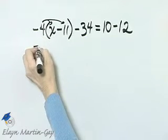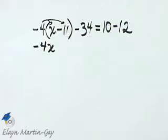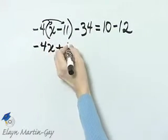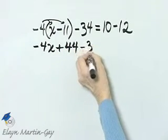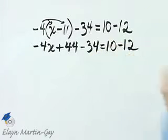So negative 4 times x, that's negative 4x, and then negative 4 times, let's call it negative 11, a negative times a negative is positive, and 4 times 11 is 44 minus 34 is equal to 10 minus 12.